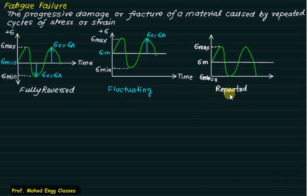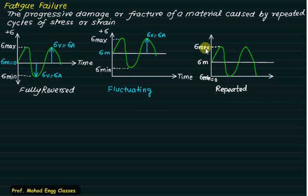The third type is repeated stress, where sigma mean equals zero. Here sigma mean is positive on one side and negative on the other. Sigma max is the peak value, and sigma mean is the average of the two extremes.